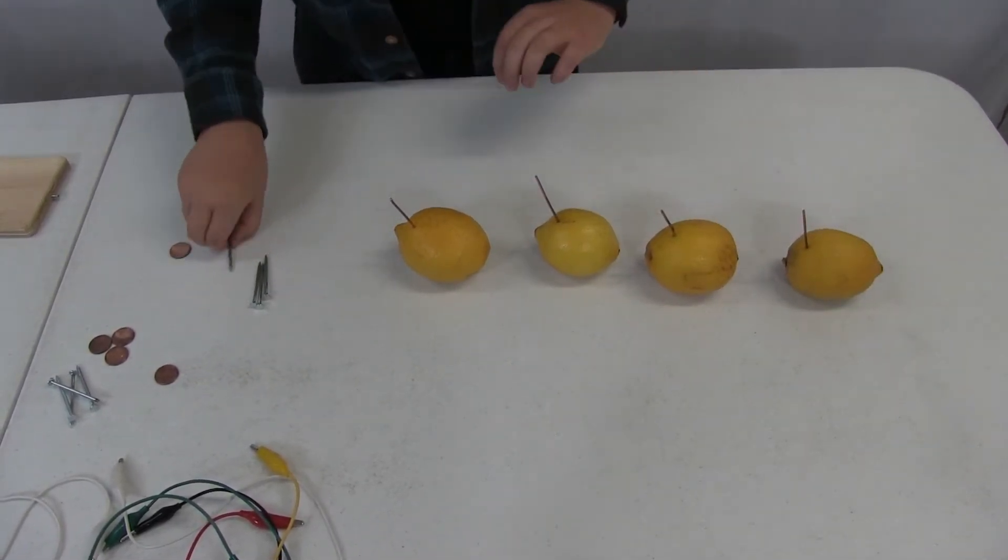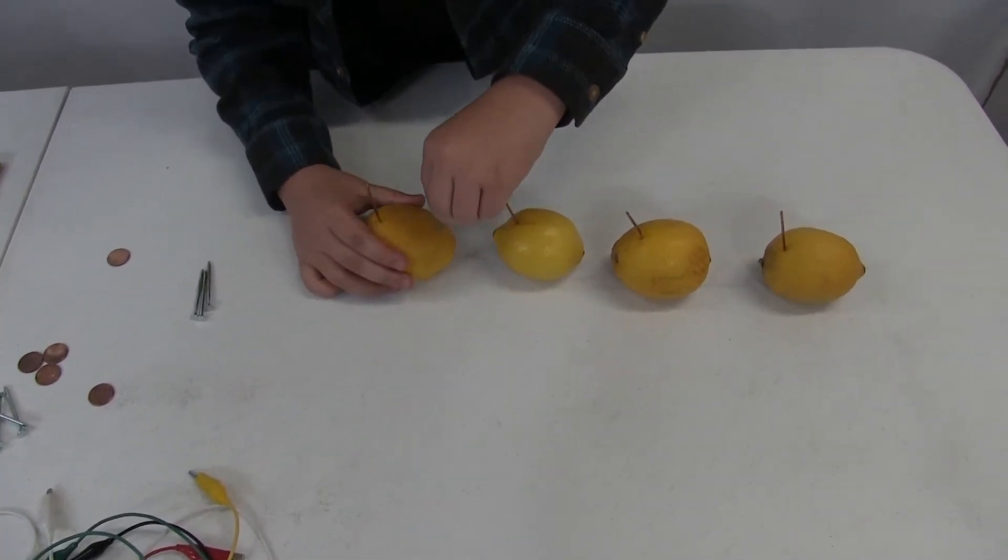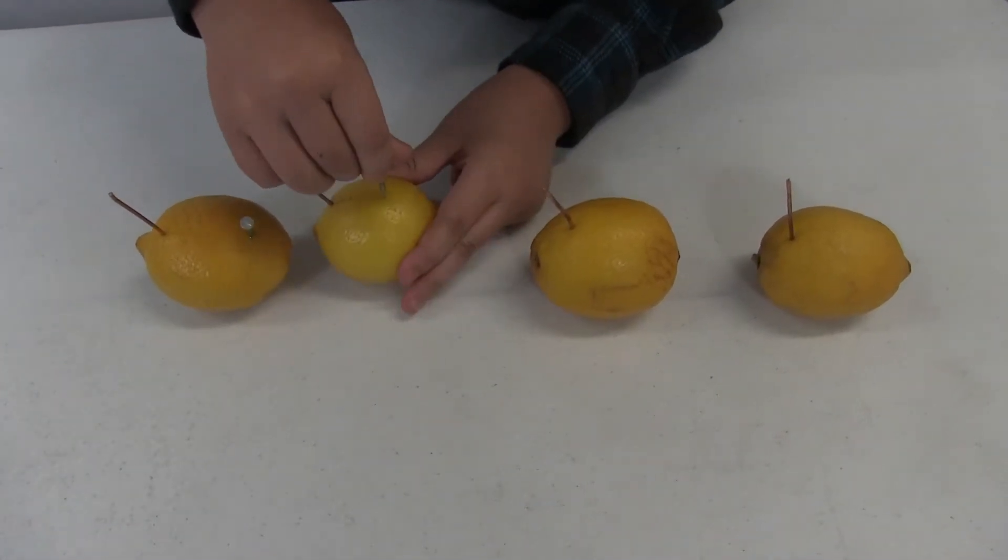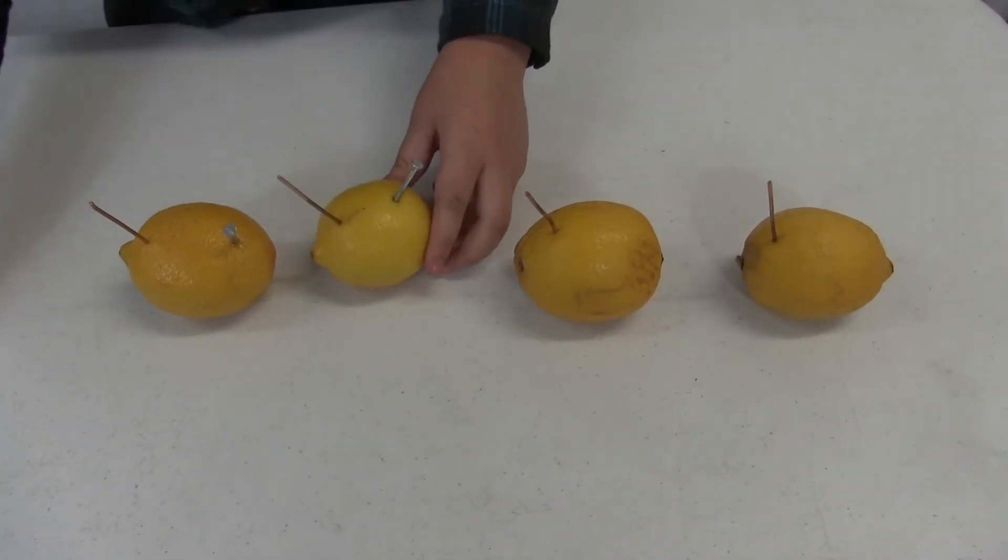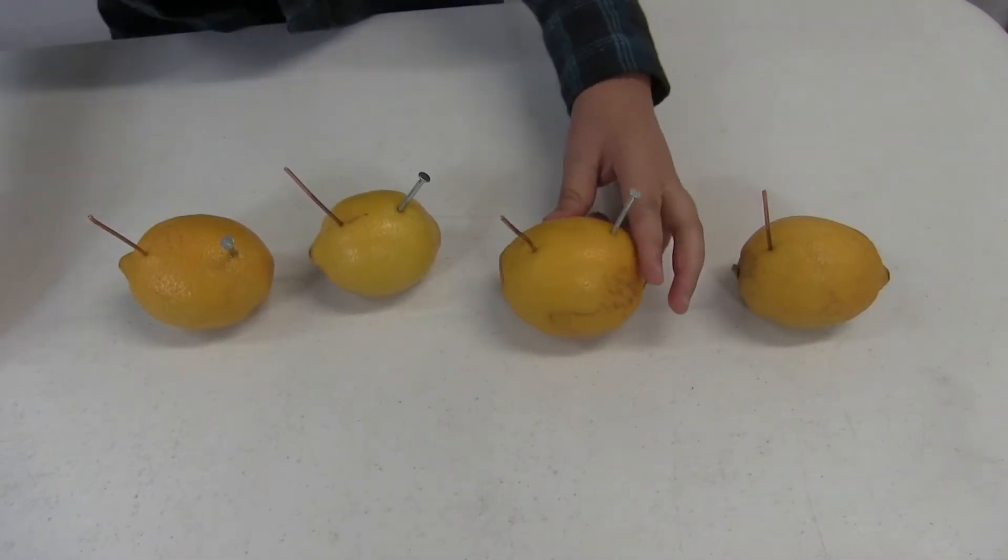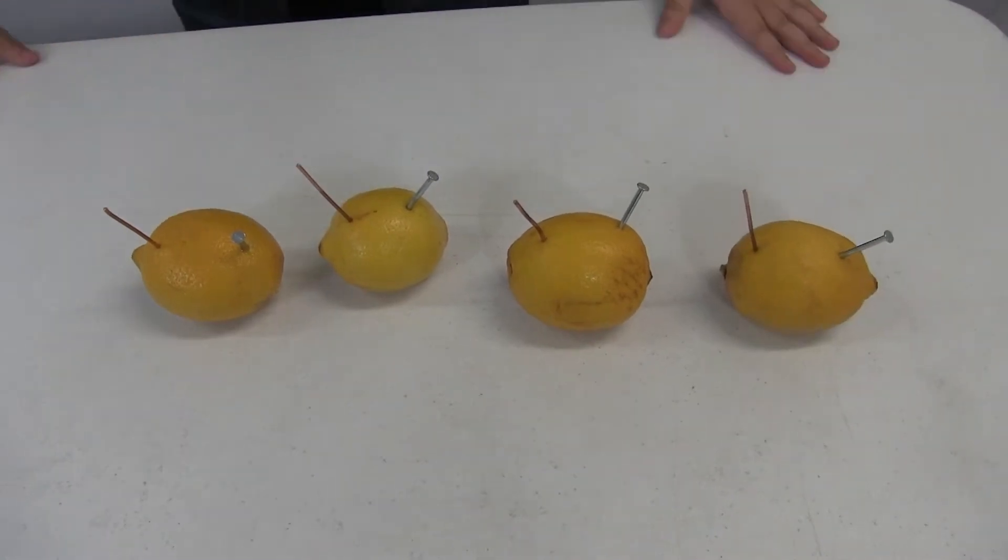Then you're going to want to get zinc nails and just put it onto the other side, just like so. And you're going to do that with how many lemons you have. So it looks like they are becoming something with antennas. And that is the second step!